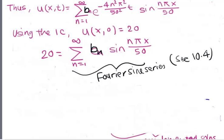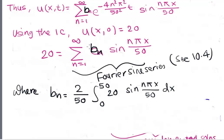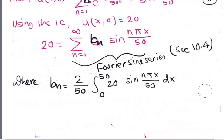This is a Fourier sine series, covered in section 10.4. We know how to find the coefficients b_n. The formula is b_n = (2/L)∫₀ᴸ f(x)·sin(nπx/L)dx, where L = 50 and f(x) = 20. So b_n = (2/50)∫₀⁵⁰ 20·sin(nπx/50)dx.